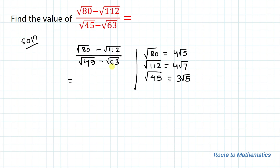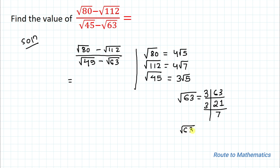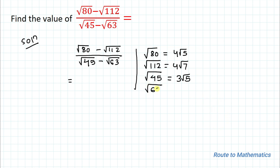For root 63, since the last digit is 3 we divide by 3 to get 21, then by 3 to get 7. We get one pair of 3s giving a single 3, and 7 has no pair, so we take it as root 7. Therefore root 63 = 3 root 7.